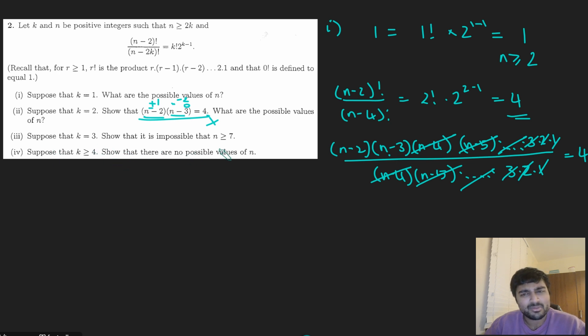Part 3. Suppose k is 3, show that it's impossible for n to be at least 7. Let's have a go at that. Well, again, just sub it in. Let's see what we get. So we get (n - 2)! over (n - 6)! now equals 3!, which is 6 multiplied by 2 squared, which of course gives us 24. 24, that's 4!. Interesting. Let's have a look at the left-hand side here. Again, we can do this kind of expanding and cancelling, and we're going to get (n - 2)(n - 3)(n - 4)(n - 5) equals 24.